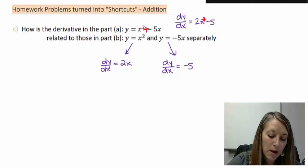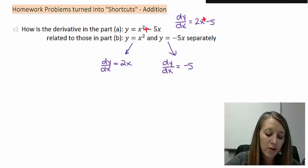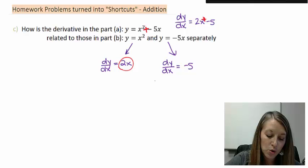So if I have my first piece plus my second piece, my derivative ends up being my first derivative plus my second derivative.